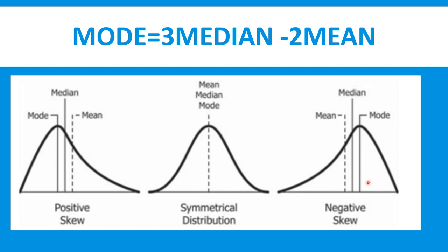Negative skew کے اندر mean سب سے چھوٹا، پھر median، اور سب سے بڑی value mode کی ہوتی ہے۔ یہ relationship — mode is equal to 3 median minus 2 mean — تینوں cases میں exist کرتی ہے۔ اگر mean، median اور mode برابر بھی ہوں تو بھی یہ relation درست ہوگا، کیونکہ 3 median minus 2 mean میں سے ایک median بچ جائے گا جو mode کے برابر ہوگا۔ ہم اسے mainly positive skew اور negative skew میں utilize کرتے ہیں۔